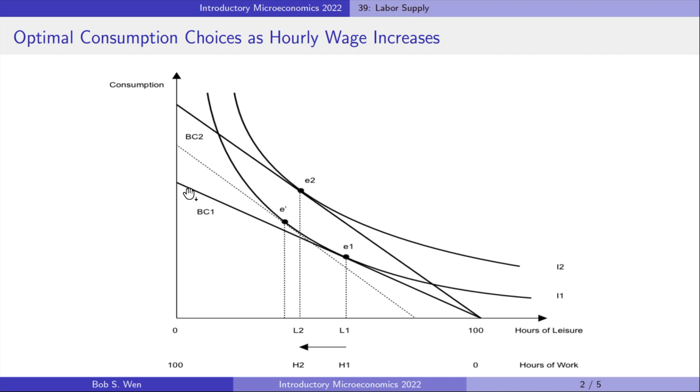We first analyze how her optimal bundles of consumption and leisure change with an increase in her wage. As shown in the graph, we put consumption on the vertical axis and leisure time on the horizontal axis. The increase in her wage rotates her budget line upward. Her budget line becomes steeper.